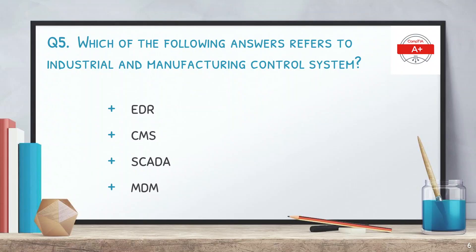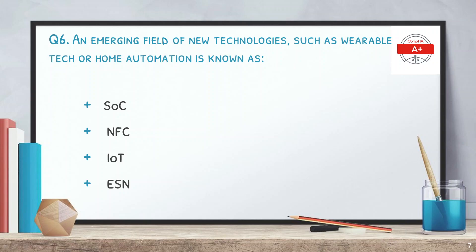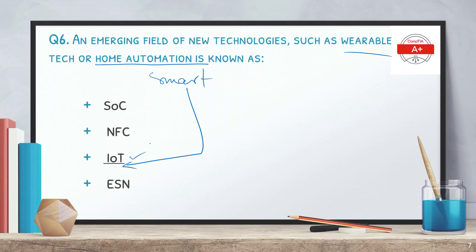Question number five: which of the following answers refers to industrial and manufacturing control systems? The options are EDR, CMS, SCADA, and MDM. Question number six: an emerging field of new technologies such as wearable tech or home automation is known as — the options are SOC, NFC, IoT, and ESN. The correct answer is IoT, also known as Internet of Things. IoT devices are used in smart homes and home automation.